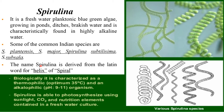The name spirulina is derived from the Latin word for helix or spiral. Biologically it is characterized as thermophilic, meaning it can grow at an optimum temperature of 35 degrees centigrade, and alkalophilic, meaning the pH range is from 9 to 11 in which this organism can grow optimally. Spirulina is able to photosynthesize using sunlight, carbon dioxide, and nutritional elements contained in the freshwater culture.